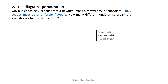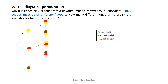For the first scoop, she can have mango, strawberry, or chocolate. Since the second scoop must be of a different flavour, after choosing mango, she can't have mango again — she is left with strawberry or chocolate. After strawberry: mango or chocolate. After chocolate: mango or strawberry.